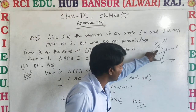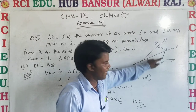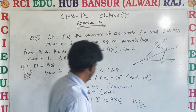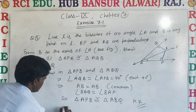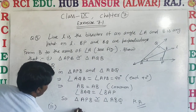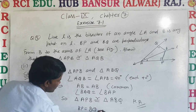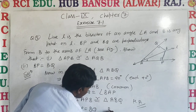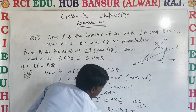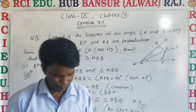By corresponding parts of congruent triangles, BP is equal to BQ. This is proved by CPCT rule.